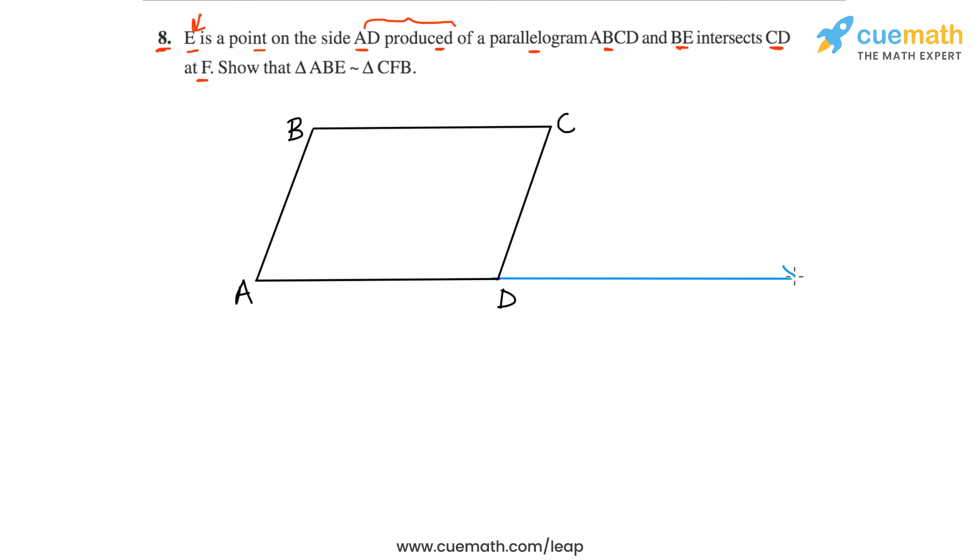And now E is a point on this AD produced. So let's take E to be this point here.